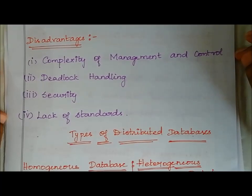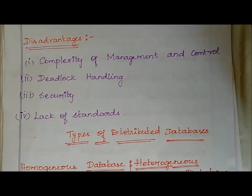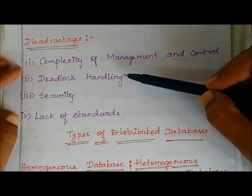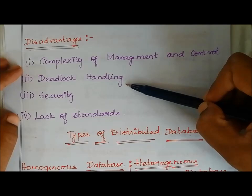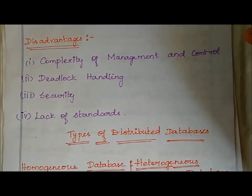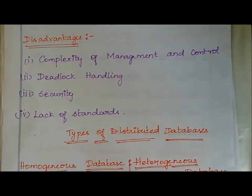The disadvantages of distributed database: first, complexity of management and control — managing, controlling, and maintaining databases at different locations is complex. Second, data deadlock handling — there are chances of deadlock issues. Third, security — providing security for data and information across different locations is a difficult task. Finally, lack of standard — there is a lack of standard in distributed databases. This concludes the introduction to distributed database systems.